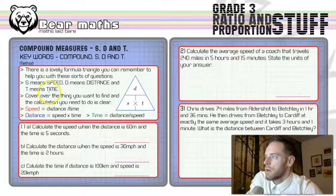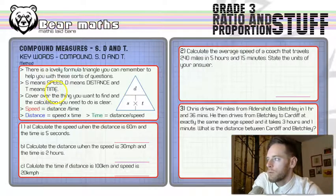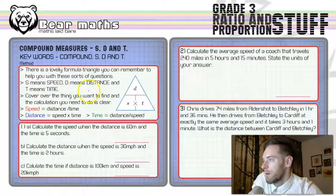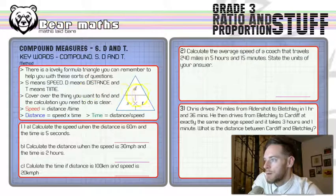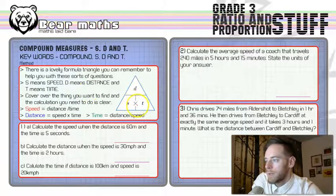There's a lovely formula triangle that you can remember to help with these questions. It's right here: S, D, and T. The line means divide, and then you've got these two that you're multiplying together. It doesn't matter which way round they go, but it's nice to remember as the S, D, T triangle.